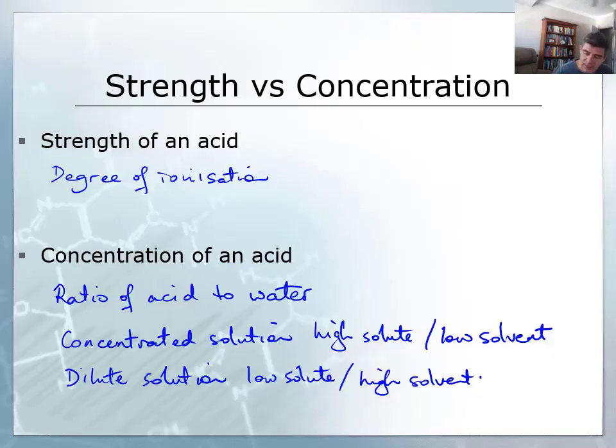So the strength of an acid is a measure of the degree of ionization. For example, if we look at something very simple such as hydrochloric acid, when this is in solution it's going to form hydrogen ions and chloride ions. If there are lots of these ions and few of the acid molecules, then we would say this is a strong acid.